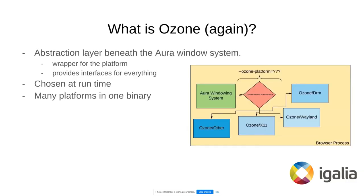So what's Ozone again? Ozone is basically an abstraction layer which in terms of Chromium lives beneath the Aura windowing system, and what it does is it provides a wrapper for the platform so that you can choose any backend that is implemented — like X11, Wayland, or even DRM, which is also possible to run on Linux.